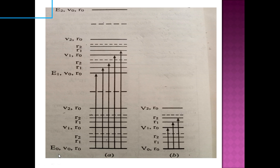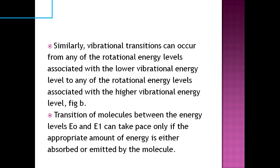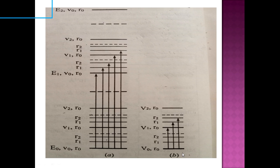As shown in the figure, when a molecule absorbs UV-visible rays, it gets excited and moves to a higher energy level. Similarly, vibrational transitions can occur from any of the rotational energy levels associated with the lower vibrational energy level to the rotational energy levels associated with the higher vibrational energy level.